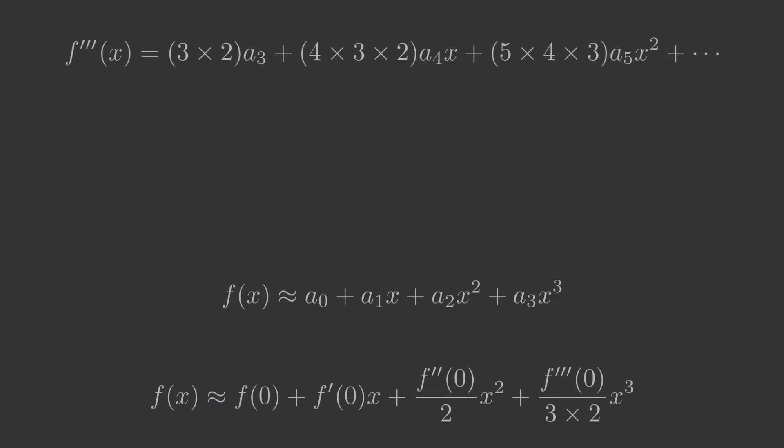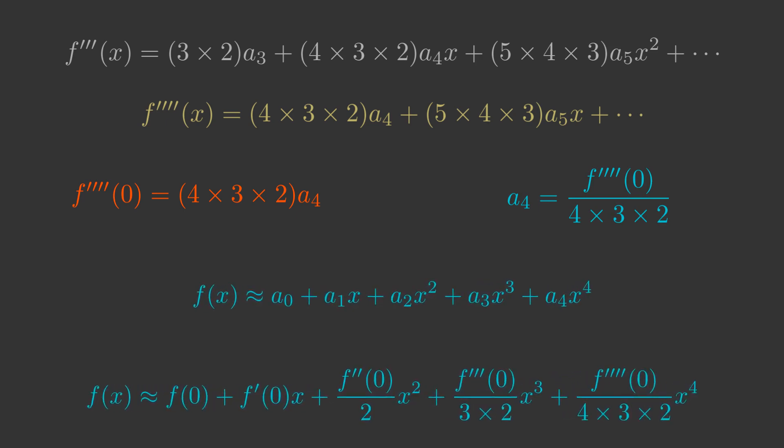Now we will find a4. We differentiate again, but we won't go through it in detail this time. The result is that f4 prime 0 is 4 times 3 times 2a4, so a4 is f4 prime 0 over 4 times 3 times 2. This adds an extra term in x to the 4.